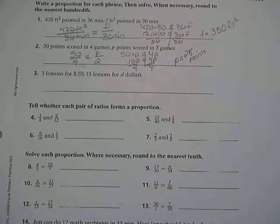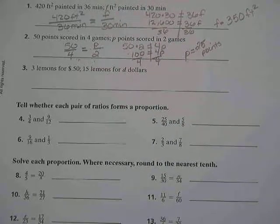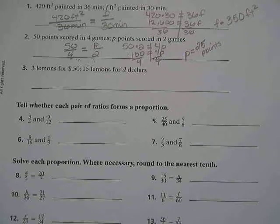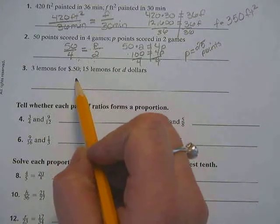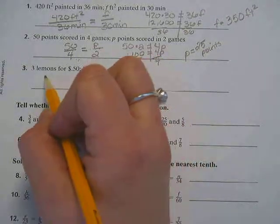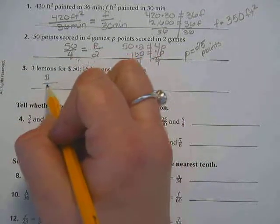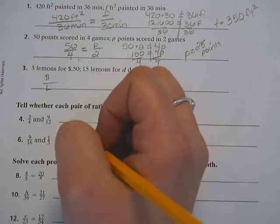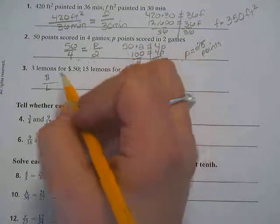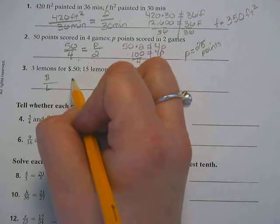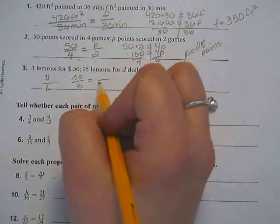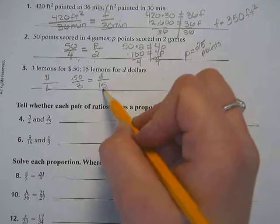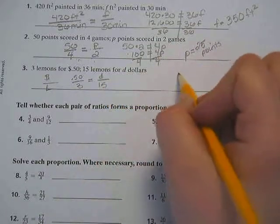We have 3 lemons for 50 cents. So we want to figure out how much money is it going to cost if I want 15 lemons. So let's set this up. Now you might be able to do this in your head. So you might have an idea already what the answer is going to be, but let's set it up so we know that we did it correctly. So let's just put price on top, lemons on the bottom. And you could put lemons on top, price on the bottom. It doesn't matter, as long as you stay consistent. So I've got 50 cents on top for 3 lemons, and that has to be D for 15 lemons.